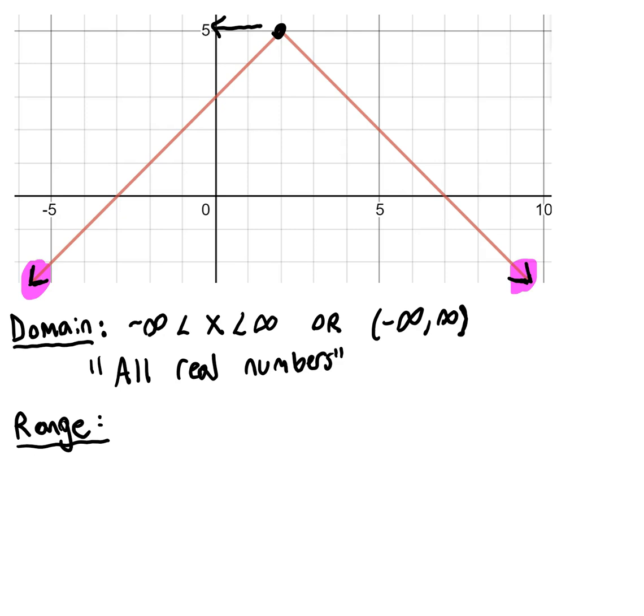We can write the range most simply as y is less than or equal to 5. If I'm using interval notation, that would be from negative infinity up to 5 with a square bracket indicating that 5 is a part of the range.